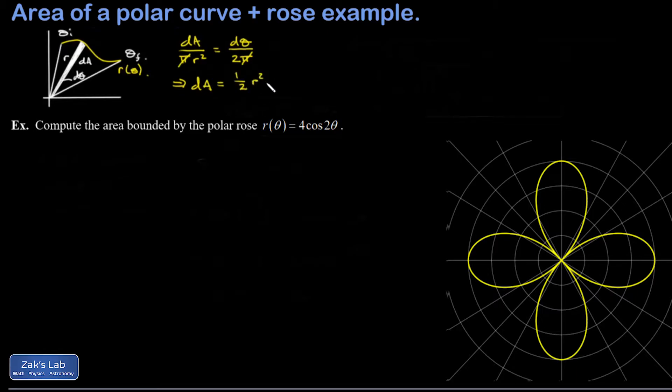Now we just add up the dA's to get the total area, and that's what integration does. We can go ahead and plug in that we're going from some initial angle to some final angle, and we have one-half r²dθ. That's it, we have our area formula now for polar equations.